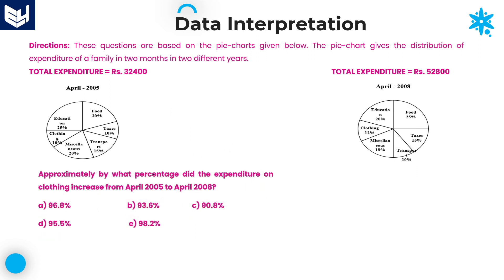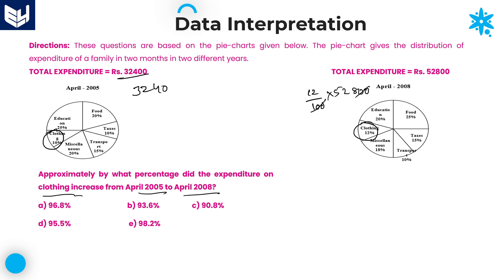Last question in this session: approximately by what percentage did the expenditure on clothing increase from April 2005 to 2008? Clothing is 10 percentage of 32,400, which is 3,240. In 2008, clothing is 12 percentage of 52,800. Cancelling two zeros: 528 into 12 gives 6,336. Percentage increment equals (6,336 minus 3,240) divided by 3,240, into 100. The difference is 3,096.